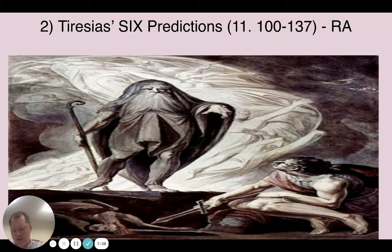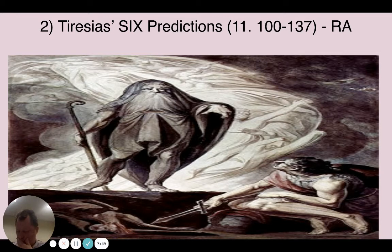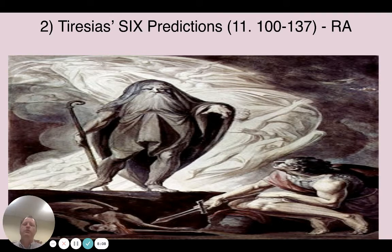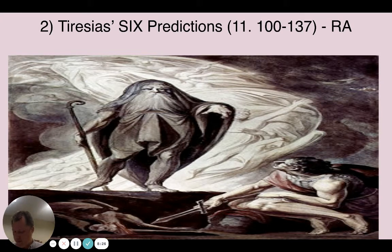Maybe the most important set of concrete information can be found on page 282, line 100. Please bracket, underline, or highlight as we read together. Circe has said you have to talk to Tiresias. Tiresias is a really important figure in the Oedipus plays by Sophocles, but for our purposes he's someone who knows the future of people even from beyond the grave. The ghost of Tiresias tells Odysseus six specific things that have to happen — make sure you mark all six.